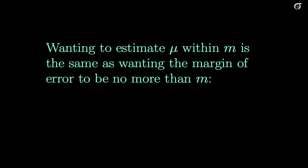Our first point to note is that wanting to estimate mu within m is the same as wanting the margin of error of a confidence interval to be no more than that amount m. So our 95% confidence interval margin of error looks something like this: 1.96 sigma over square root of n. And I need that to be less than or equal to m.